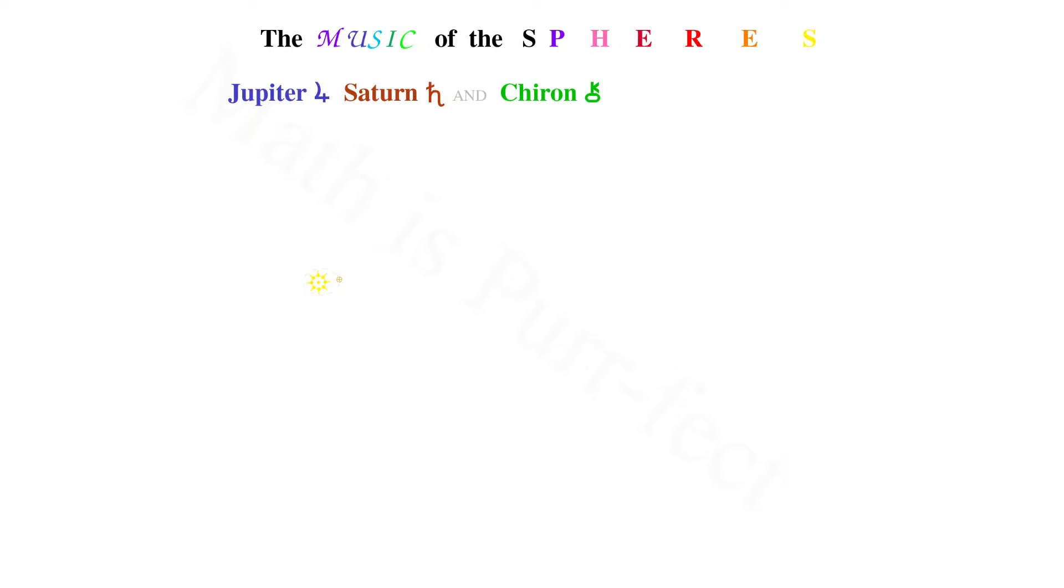The first planet we will look at is Jupiter, whose distance from the sun is over five times farther than the earth. As you may recall from my analysis of the music of the inner spheres, the periodicity of each was related to the earth by factors of the golden ratio phi.